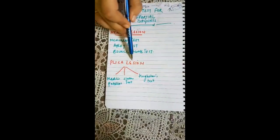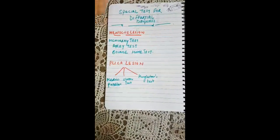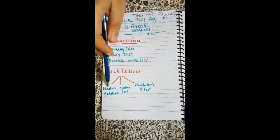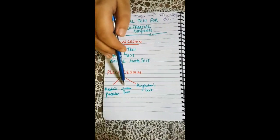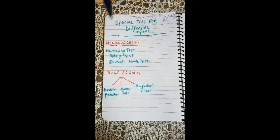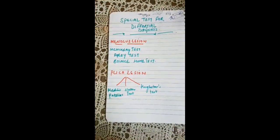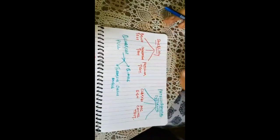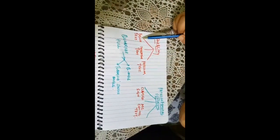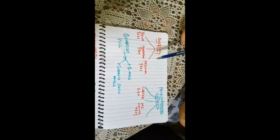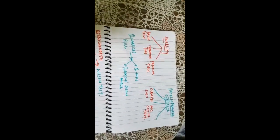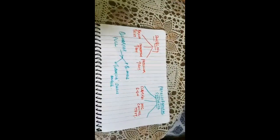For plica lesion, three tests are performed: the medial patellar plica test, the Stutter test, and the Hughston test. These differentiate whether a plica lesion is present. For swelling, three tests are used: the brush test, the indentation test, and a patellar test, helping the examiner differentiate swelling from other conditions.